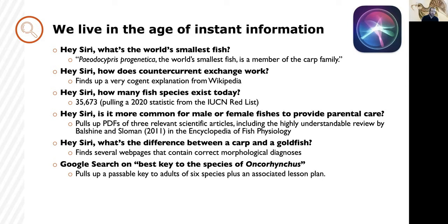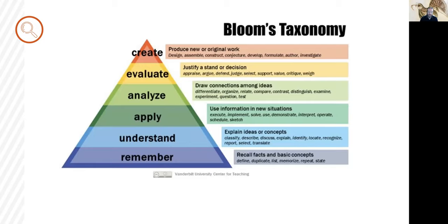Faced with that success, one might ask whether we even still need courses in ichthyology. If students already have free and instant access to the world's knowledge about biodiversity, what's the point of covering that material in a class? The answer, of course, is that simple retention of facts forms the lowest tier of cognition in any academic discipline, as commonly summarized in Bloom's Taxonomy of Knowledge. Access to all the knowledge in the world offers little utility unless one knows what to do with that information. Do students understand connections between facts and concepts? Can they apply what they have learned in new contexts, such as by inferring the ecology or systematic placement of an organism they haven't seen before? Can they select and synthesize knowledge to produce something creative and original? These are the skills that demonstrate mastery of a subject.